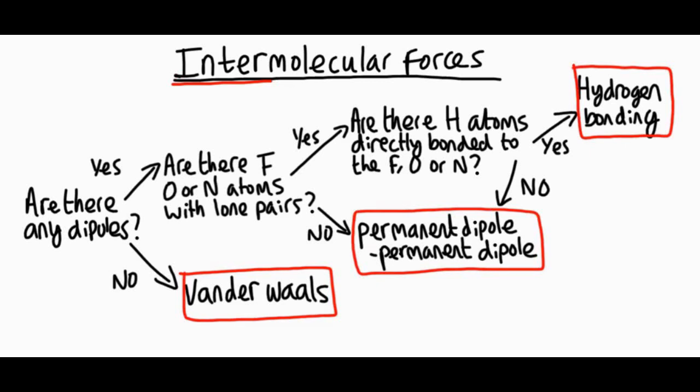Let's take an example: bromine, Br₂ molecules. Bromine atoms are just as electronegative as each other — they have the same pull on the electrons. So bromine is non-polar, which means the strongest type of intermolecular force will be van der Waals. There are no dipoles.